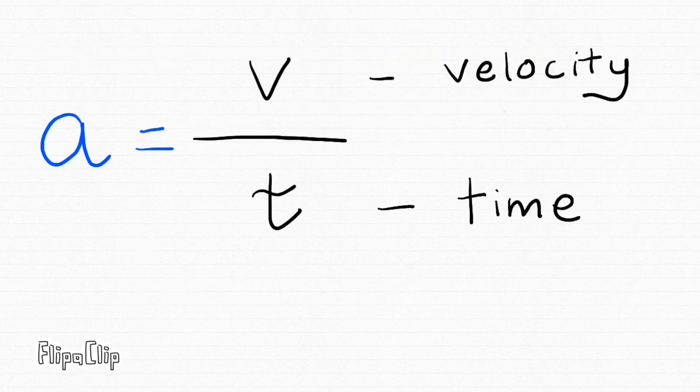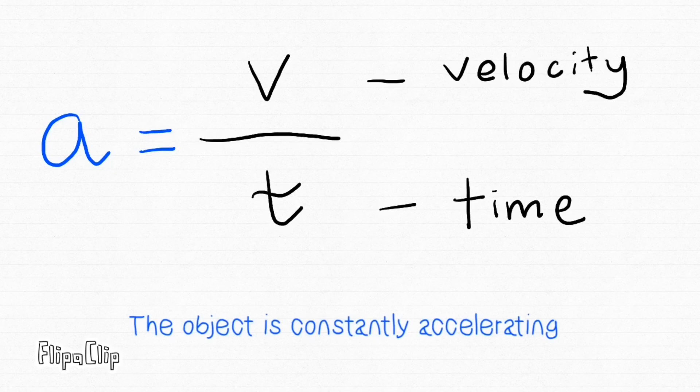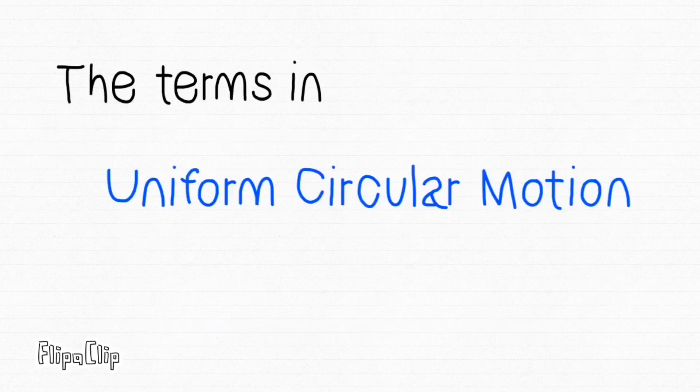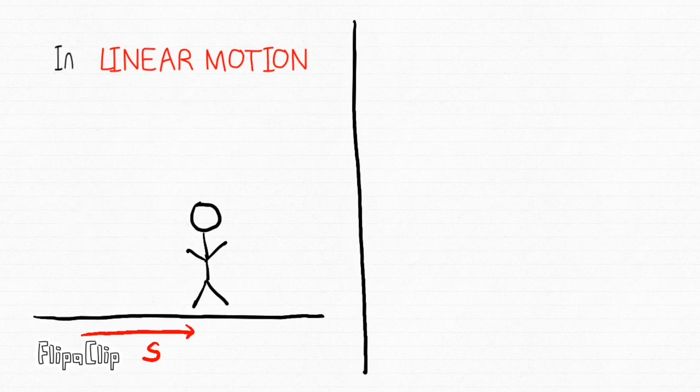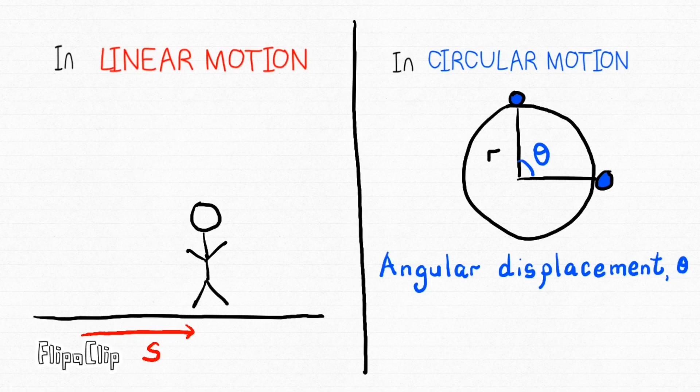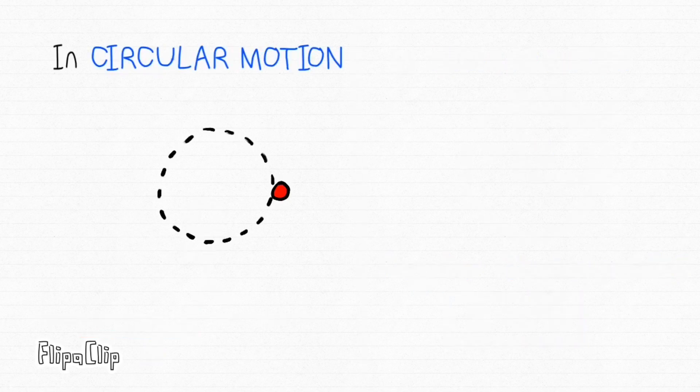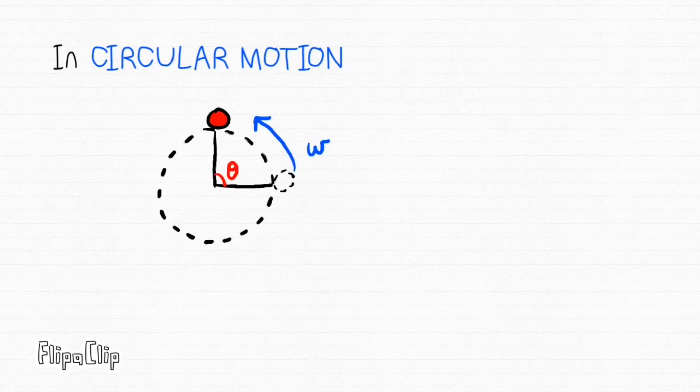the object is constantly accelerating. Now let's discuss all the terms. In linear motion, we have displacement. In circular motion, we have angular displacement. The formula is s = rθ. In circular motion, the object is rotating with